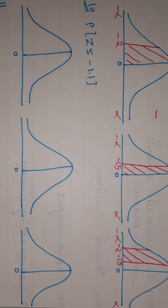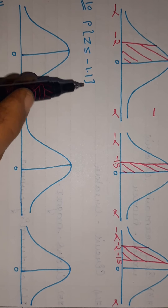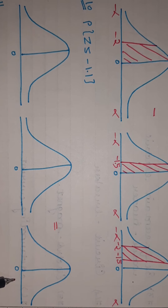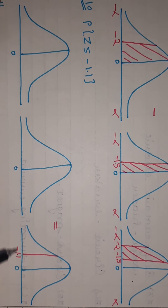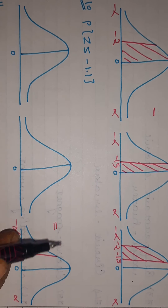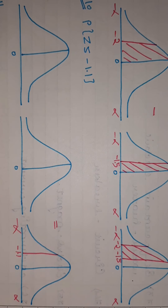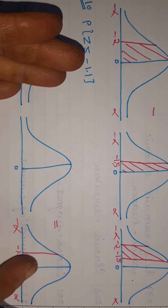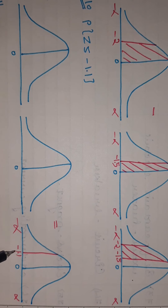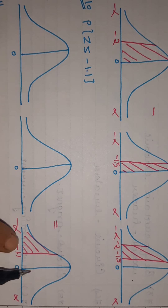The last question of this type: find the area for Z ≤ minus 1.1. Since it is minus 1.1, it is on the left-hand side. Less than means the values below minus 1.1, which will be further to the left. So the required area is to the left of minus 1.1. To find it, we take the full area from minus infinity to 0 (which is 0.5) and subtract the area from minus 1.1 to 0.